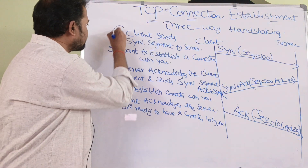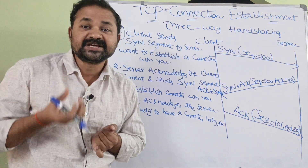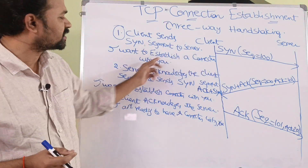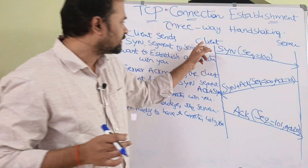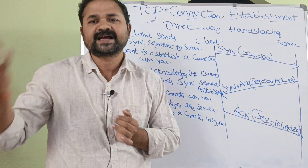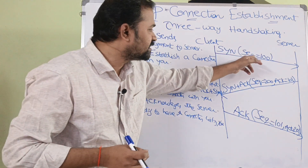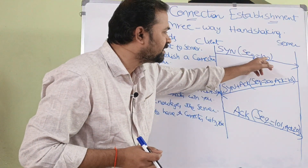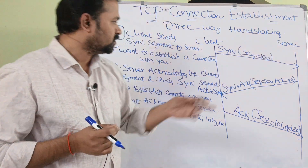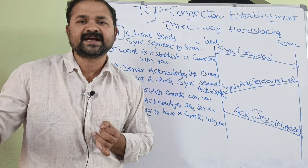The first step: the client sends a SYN segment to the server. SYN stands for Synchronization. This SYN segment specifies that 'I want to establish a connection with you.' The client sends the SYN segment to the server with a sequence number of 100.